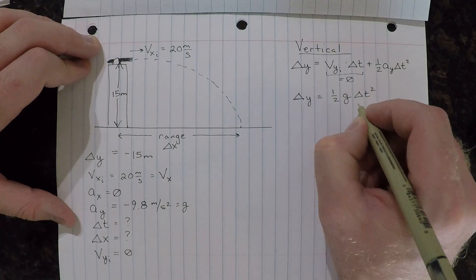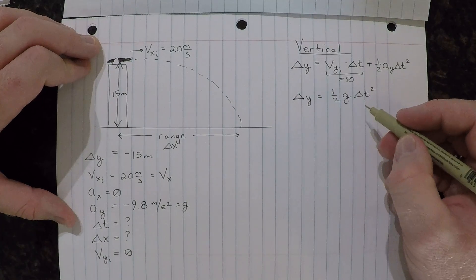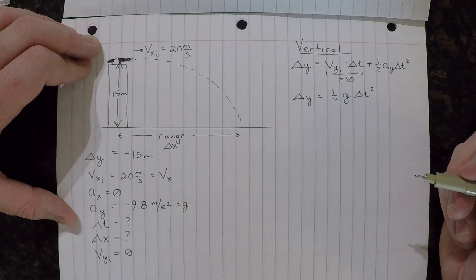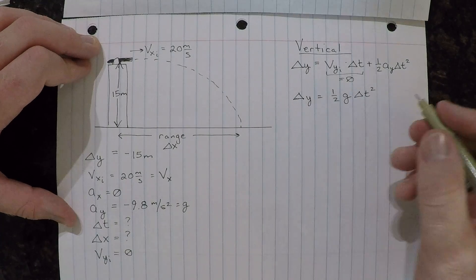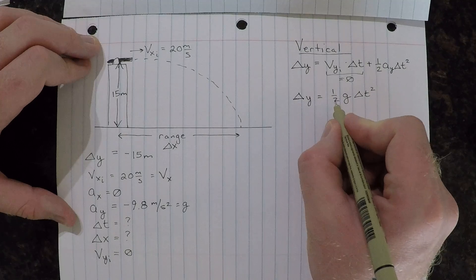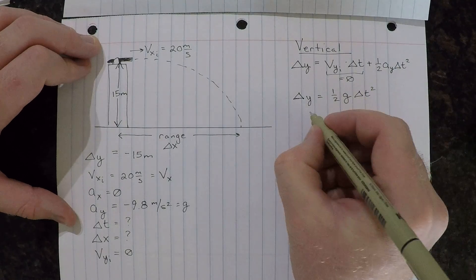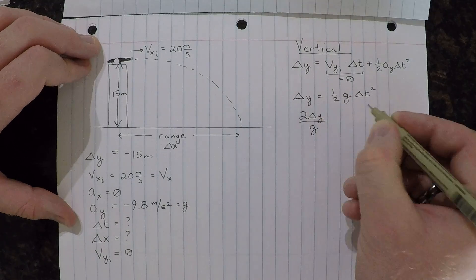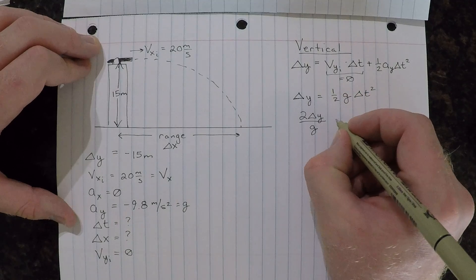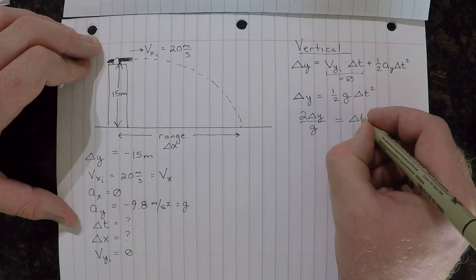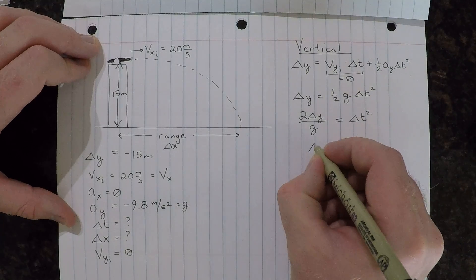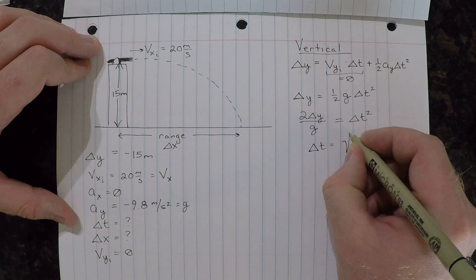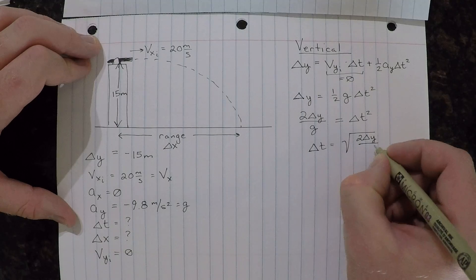We're going to use this to solve for delta t, because once we have delta t, we can actually then get the horizontal range in the next portion of the analysis. So how we're going to do this is we're going to multiply both sides by two and divide both sides by g. When I do that, I get two delta y over g. That cancels out the one-half and the g on this side, and that's equal to delta t squared. Therefore, delta t is equal to the square root of both sides, so I take the square root of two delta y over g.